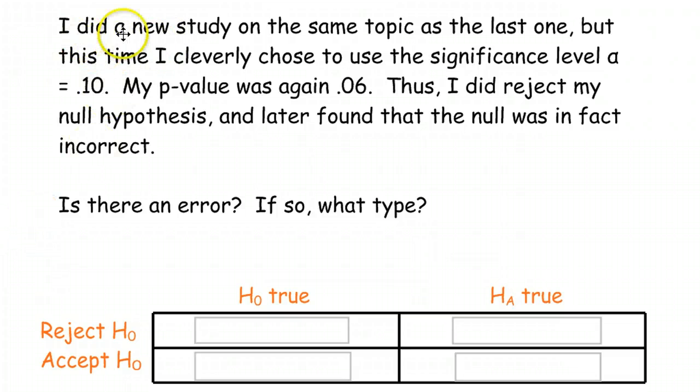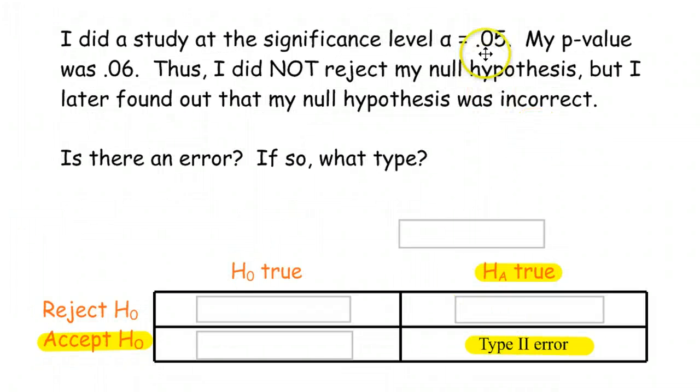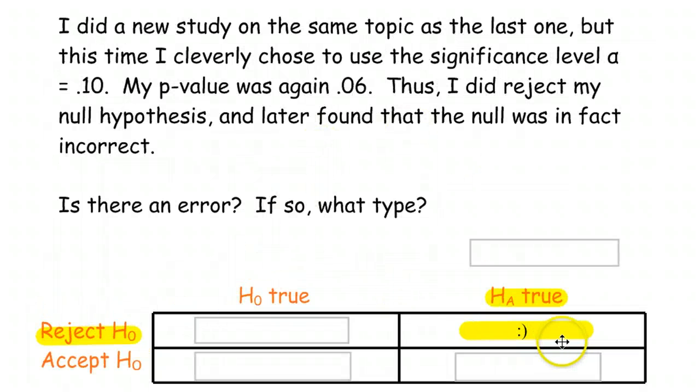A couple more examples. I did a new study on the same topic as the last one, but this time I cleverly chose to use the significance level alpha is 0.10. So, I raised my alpha. I lowered my standards. My p-value was, again, 0.06. So, this time I got to reject. So, I got to reject the null hypothesis. And later found out the alternative was true. So, in that case, I didn't make an error. Now, this might seem a little frustrating. Here, with a 0.05, you made a Type II error. And here, with a 0.10, you actually did the right thing.